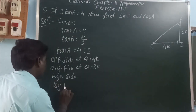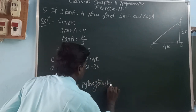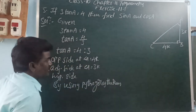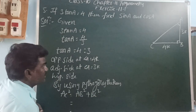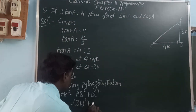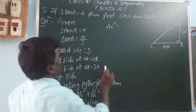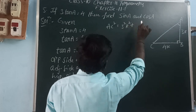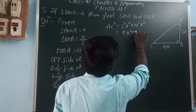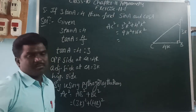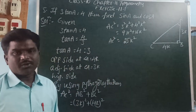Using Pythagoras theorem, AC squared is equal to AB squared plus BC squared. So AB is 3k and BC is 4k. Therefore AC squared equals (3k) squared plus (4k) squared, which is 9k squared plus 16k squared, giving us 25k squared.